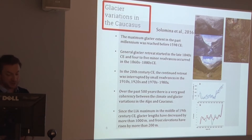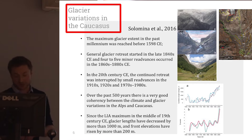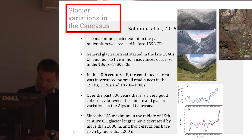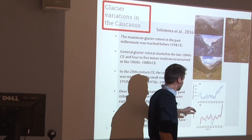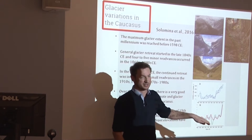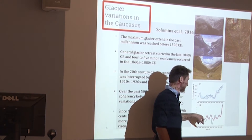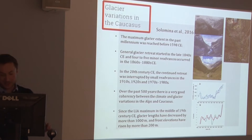To put things in historical context: there is a very nice work by Olga Solomina published in 2016. Based on length variations and moraine dating, they established that the maximum glacier extent was in 1598 — a date based on tree ring studies. This shows the length change alongside reconstructed summer temperature from tree rings: red for the European Alps, green for the Caucasus. They're essentially similar in behavior.